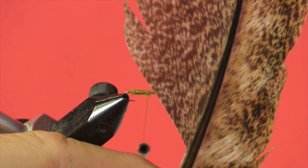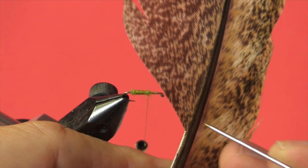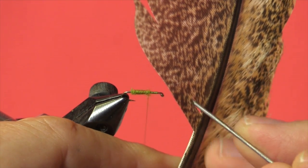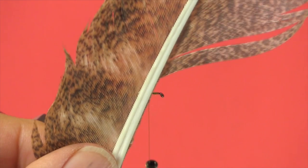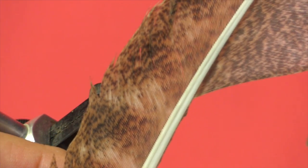Now for our wing. Here's my turkey slip. I'm going to come in here. I just take off a little less than 3/16ths. And then I'll just come in with my scissors and cut that off.